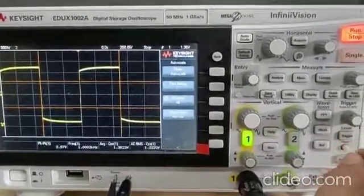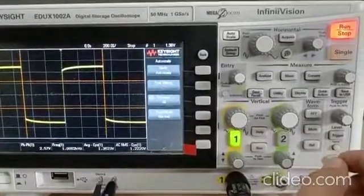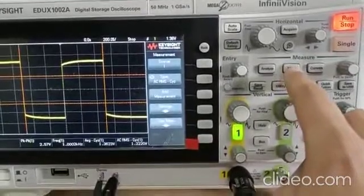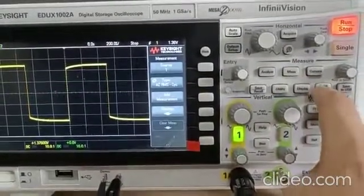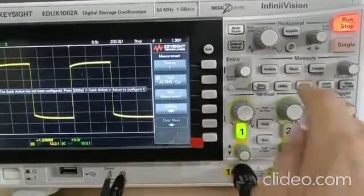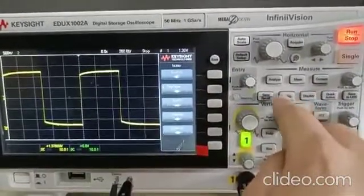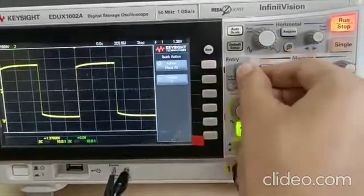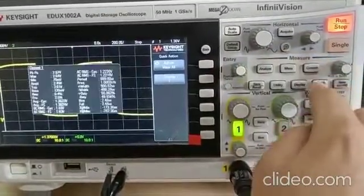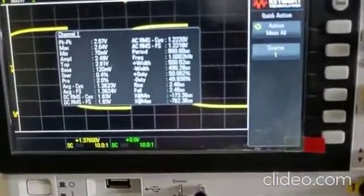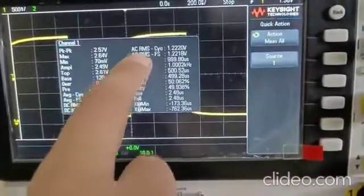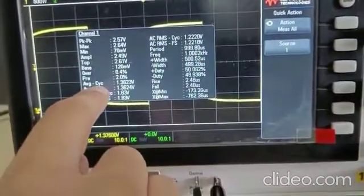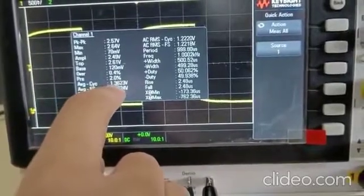To measure the average voltage of the waveform, we use measurement button and quick action. To quick action, we need to press utility, quick action, and we need to select measure all. AC RMS cyclic is 1.22 volt and average voltage is 1.36.